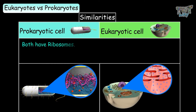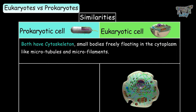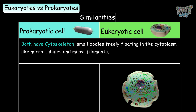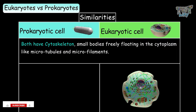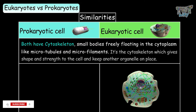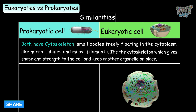Both have ribosomes. Both have cytoskeletons. Microtubules and microfilaments constitute the cytoskeleton, and it is the cytoskeleton which gives shape and strength to the cell and keeps other organelles in place.